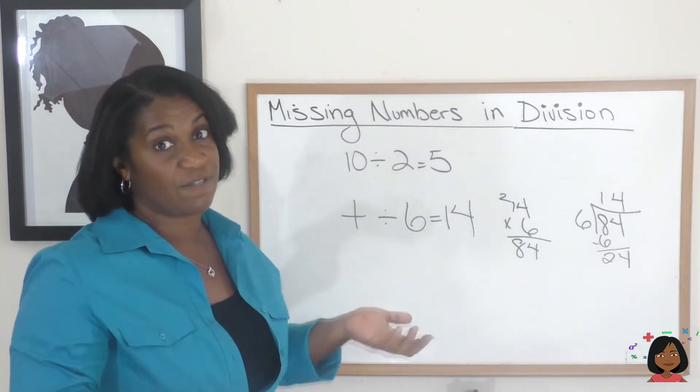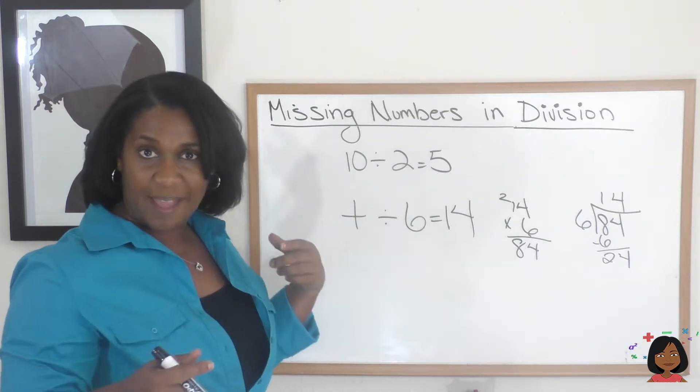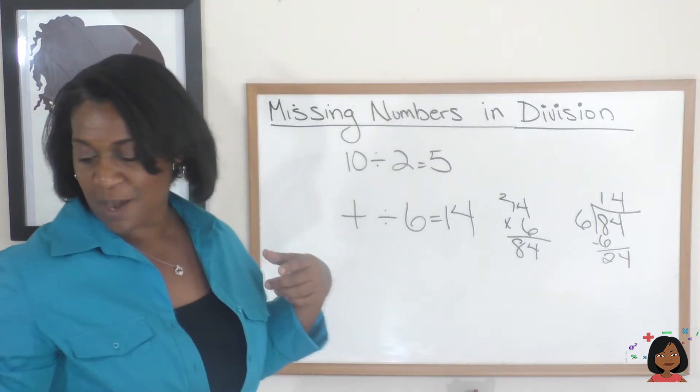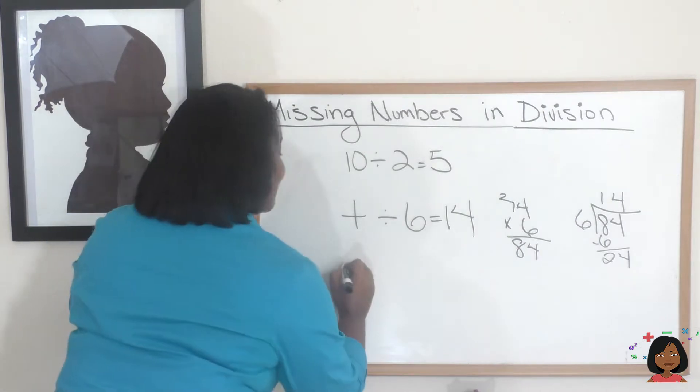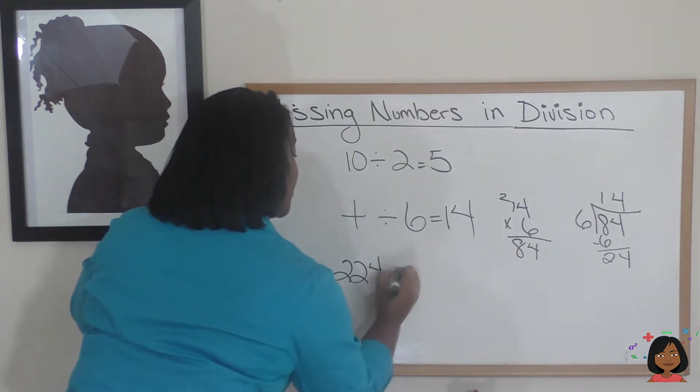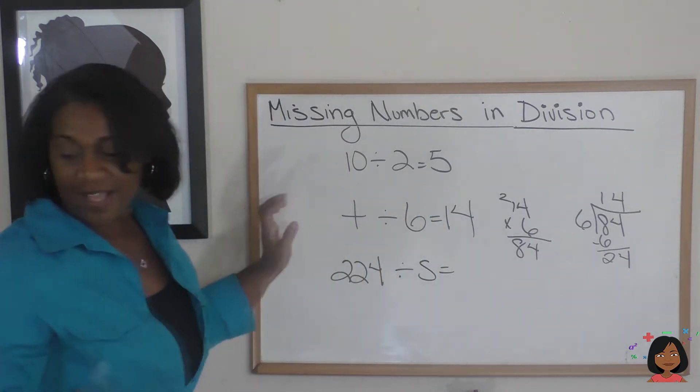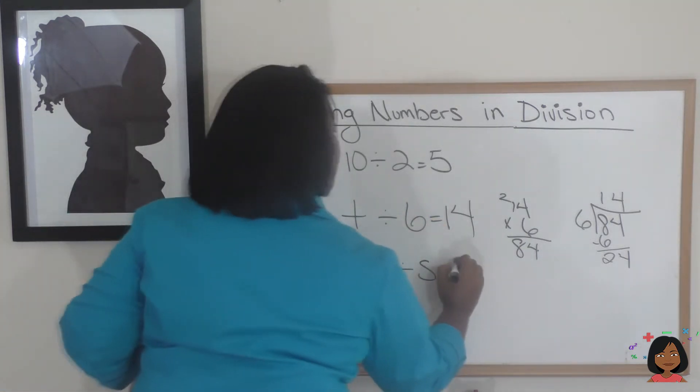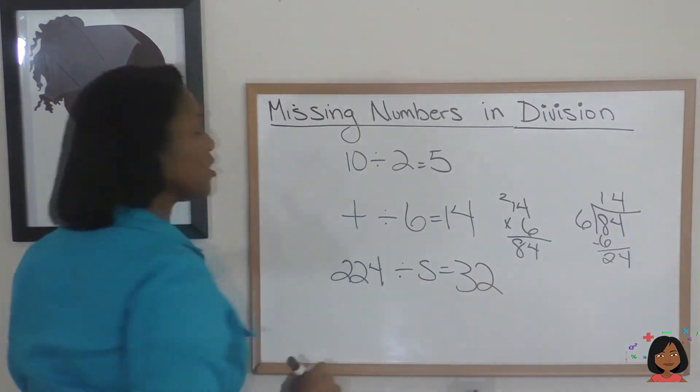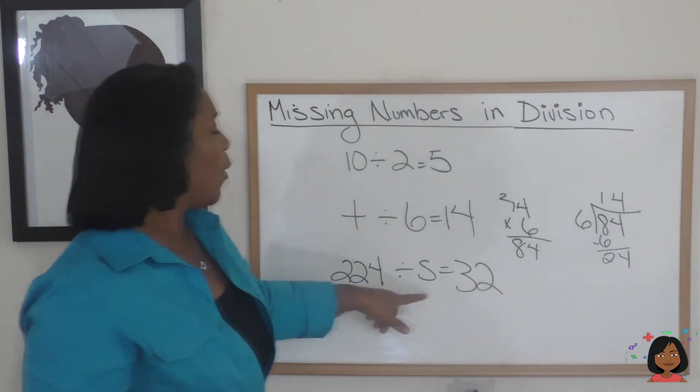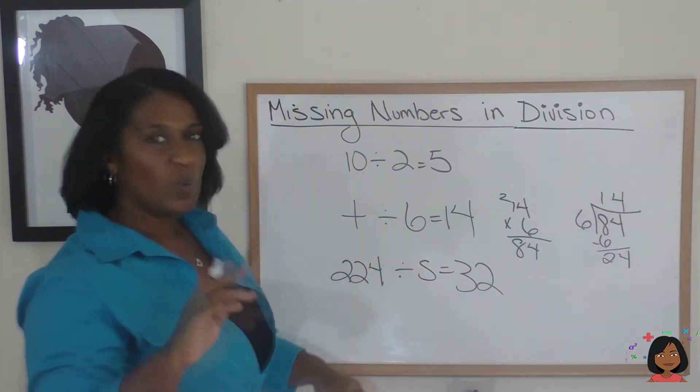But what if we wanted to switch this around and we had a missing divisor? What would we do in that case? Let me give you some numbers. I've got the number 224 divided by—we're going to use the letter s, that's our missing number—and we're going to say that the quotient is 32.